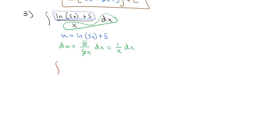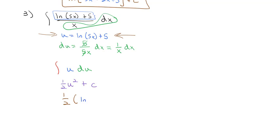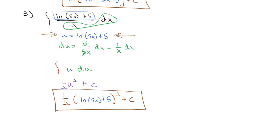So we put it together: the numerator all becomes u, and the denominator dx all becomes du. All of a sudden it's an easy integral to solve using our exponent rule — raising the exponent by 1 and dividing by 2 plus c. Now we just convert u back to x: we have 1 half times the natural log of 5x plus 5, all squared, plus our constant. And we have our final solution.